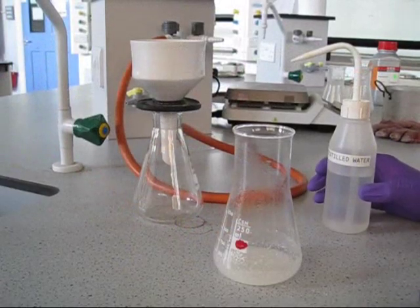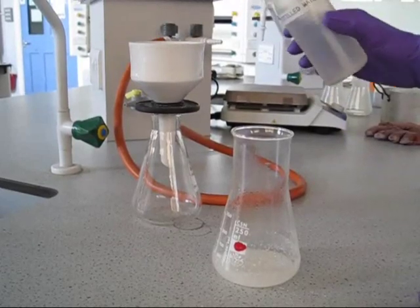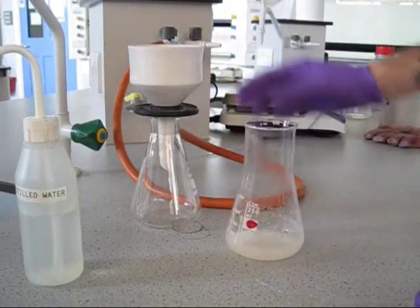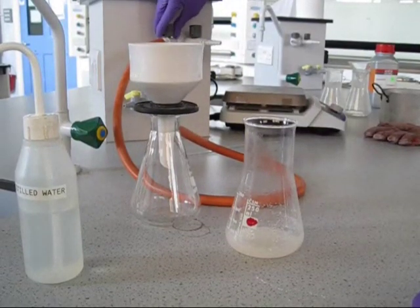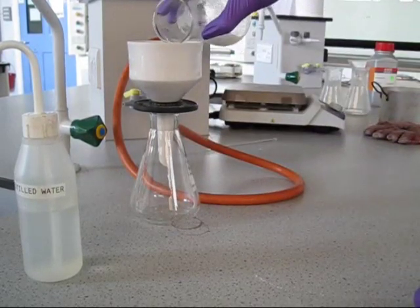Before we filter our recrystallized product, moisten the filter paper on the Buchner funnel with a little bit of the solvent, in this case water. We then turn on the vacuum tap, like so, and pour our recrystallized product through the funnel.